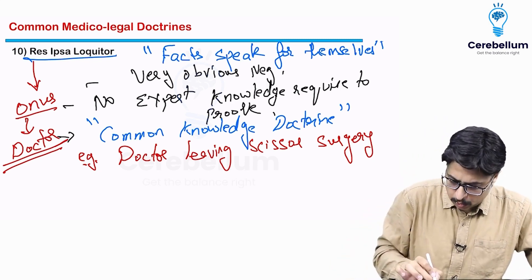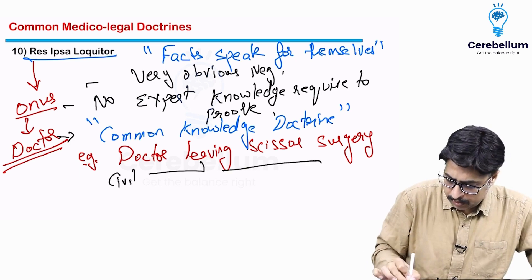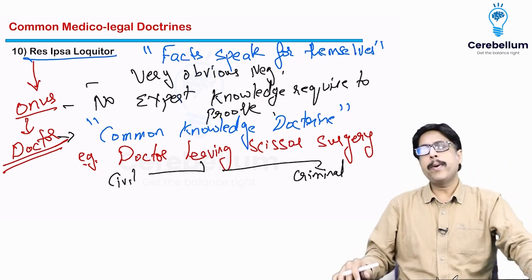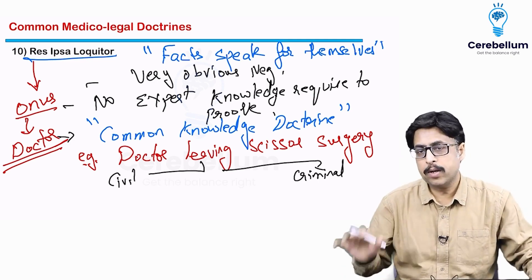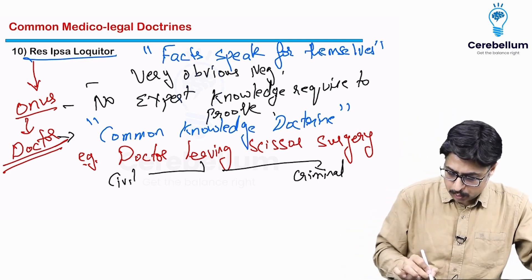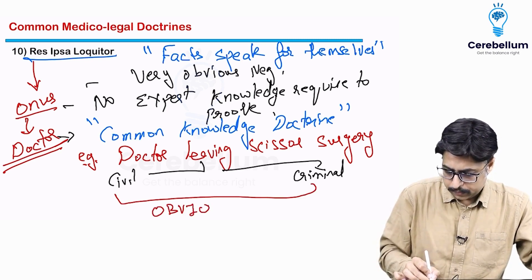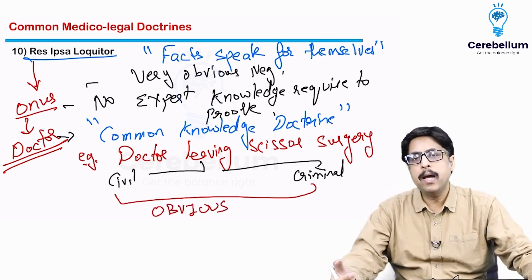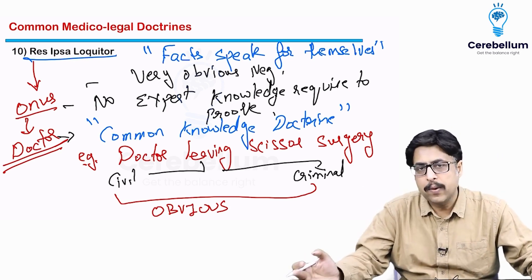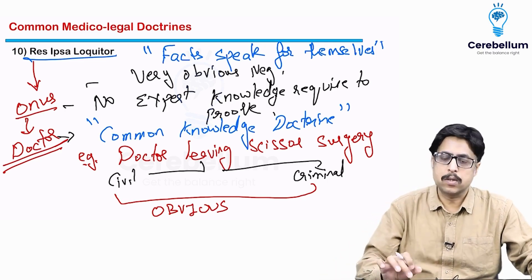Please remember, res ipsa loquitur is applicable for both civil as well as criminal negligence. It does not matter whether it is civil or criminal — what matters is whether the negligence is obvious, meaning it can be proved by layman common knowledge without requiring expert knowledge. That is res ipsa loquitur.